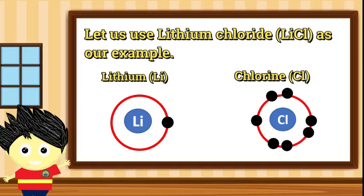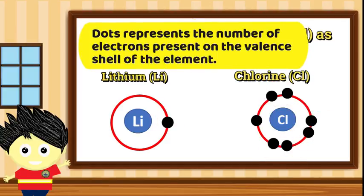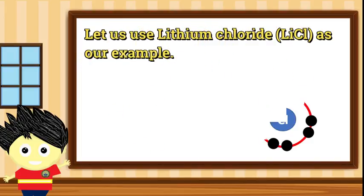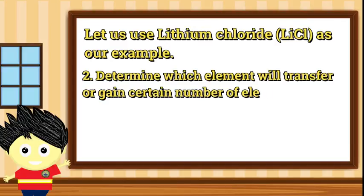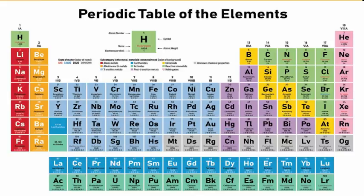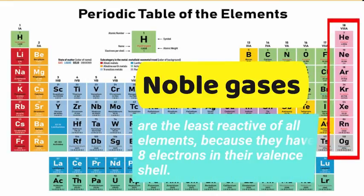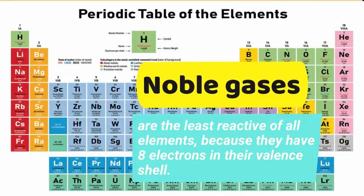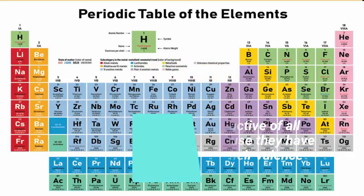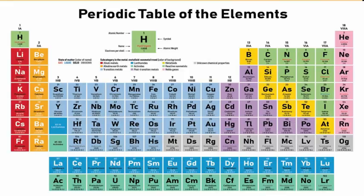Sa bahaging ito, mapapansin natin na gumamit tayo ng dots upang maging representasyon ng bilang ng electrons na nakalagay sa valence shell ng element. Pangalawa, alamin naman natin kung aling element ang magbibigay at alin ang tatanggap. Sa ating periodic table, mapapansin natin na ang bilang ng family of elements ay nagmumula sa family 1 hanggang sa family 8. Kapag ang isang element ay matatagpuan sa family 8, o yung mga tinatawag nating noble gases, ito yung mga elements na stable na in terms of energy and number of electrons on their respective valence shell. Ibig sabihin, hindi na nila kailangan pang magbawas o tumanggap pa ng electrons galing o mula sa ibang elements para maging stable.